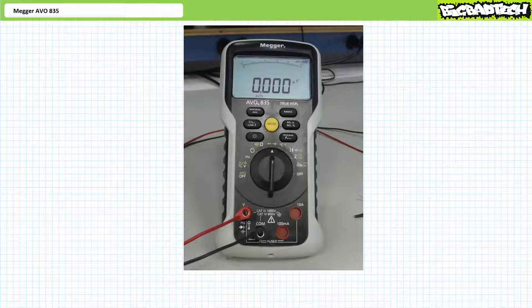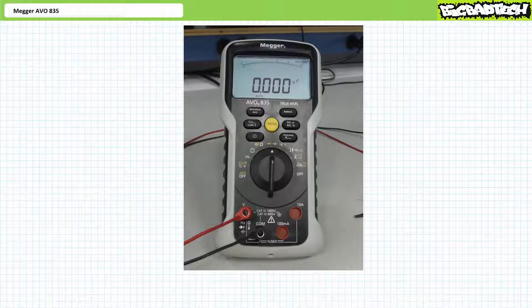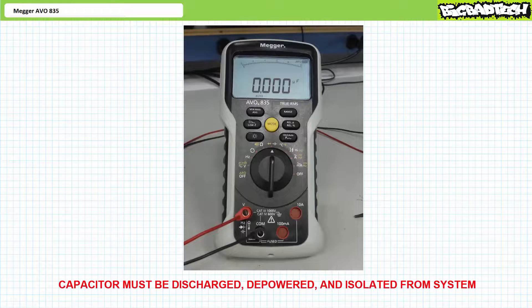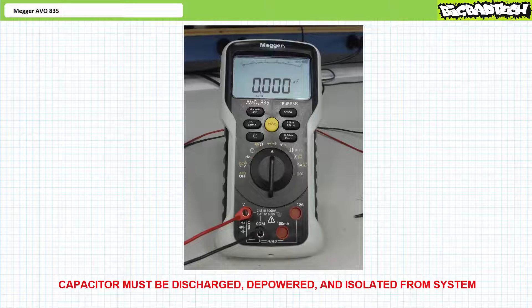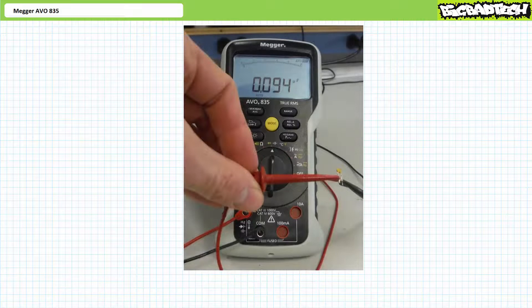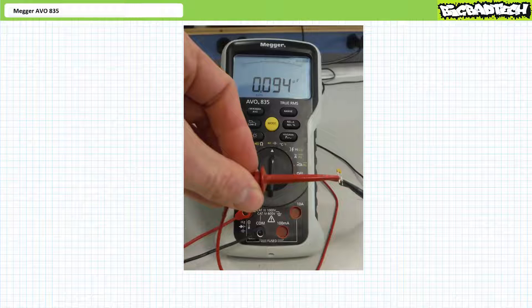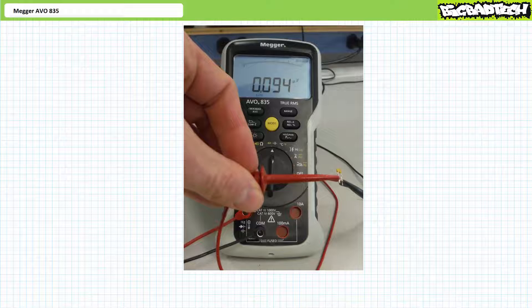Similar to an ohmmeter, a capacitance measurement function measures the capacitance of an element in units of farads placed between the two tips of the leads. The element under test must be depowered and isolated from the system. When placed between the probes, the nominal 0.1 microfarad capacitor appears to have a capacitance of 0.094 microfarads or more appropriately, 94 nanofarads. This is extremely close to the anticipated value of 100 nanofarads.